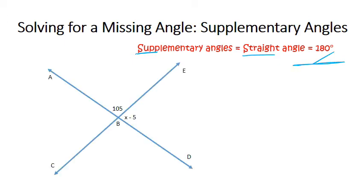So let's take a look at an example. Here we have 105 degrees for one angle and then x minus 5 for another. I can see that they make a straight line here, and so that tells me they are supplementary.